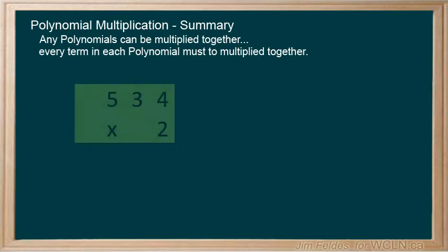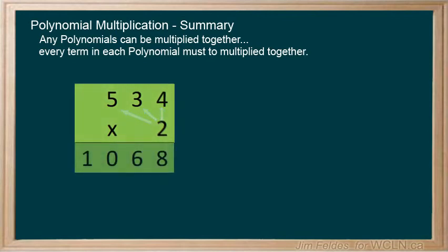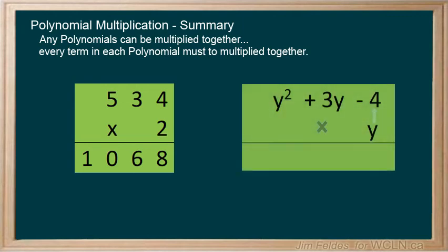Multiplying more challenging integers would lead you to something like this. The 2 would of course be multiplied by each of the place values. Similar to a term being distributed to each of the terms it is being multiplied by.